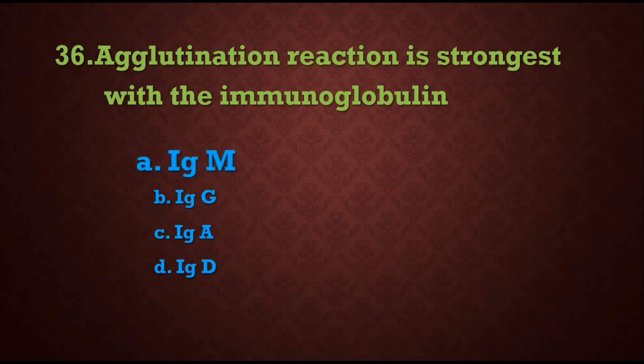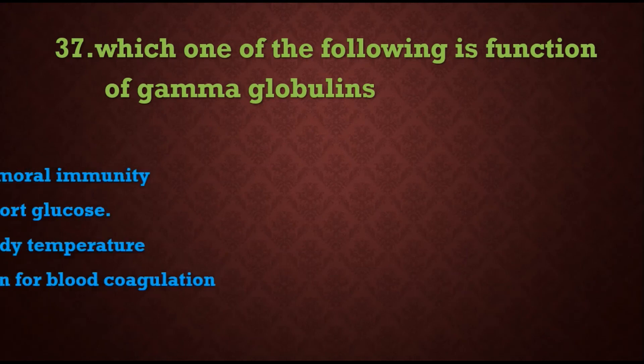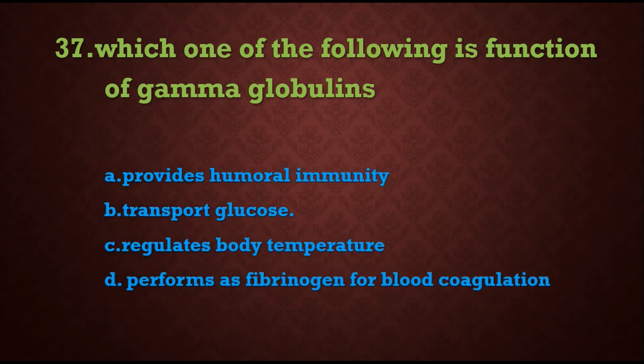Question 36: Agglutination reaction is strongest with which immunoglobulin? Options are: A) IgM, B) IgG, C) IgA, D) IgD. The answer is A) IgM, because it has greater valency, so the agglutination reaction is strongest with IgM.